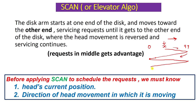Like an elevator, the SCAN algorithm scans requests and works the same way — that is why it is also called the elevator algorithm. Before applying the SCAN algorithm we need to know two things: first, the current position of the read/write head, and second, the direction in which the head is currently moving. The direction is the key additional information needed in SCAN.